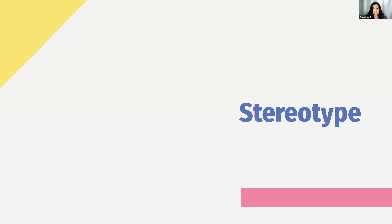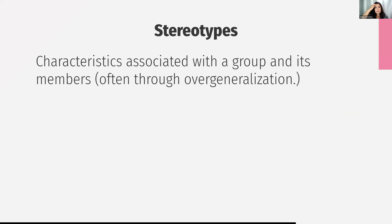We're going to start by discussing the easier concept, which is stereotype, because this is really just a cognitive process that is a function of learning and the way that our brains consolidate information. This is maybe the least emotionally triggering of all of the processes that we're going to discuss. Stereotypes are the characteristics associated with a group and its members, often through overgeneralization. It's more about concepts versus feelings or behavior — just associations in our brain.